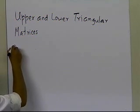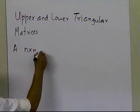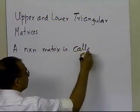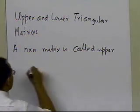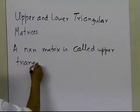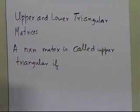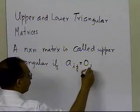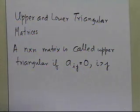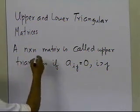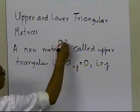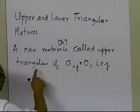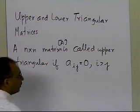So let's go ahead and see what an upper triangular matrix is. An n-by-n square matrix A is called upper triangular if the elements a_ij are equal to 0 for i greater than j. So n-by-n matrix A is called an upper triangular matrix if a sub i, j is equal to 0 for i greater than j.